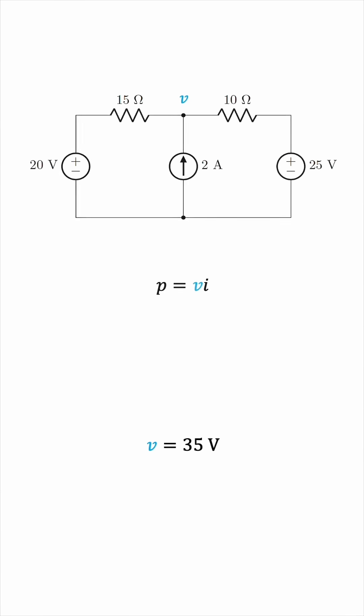So, all we have to do now is plug this 35 in the power equation, multiply it by 2, giving us 70 watts. So, this must be the power delivered by the 2 ampere source.